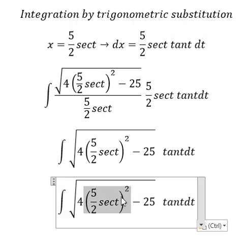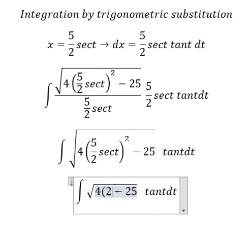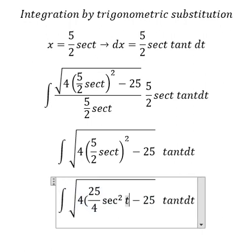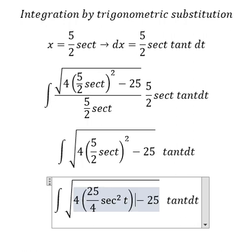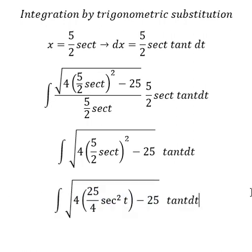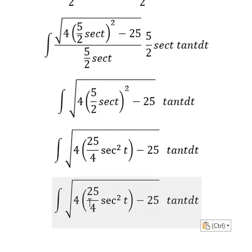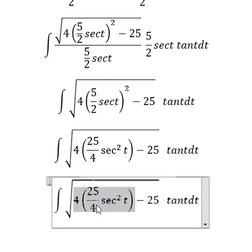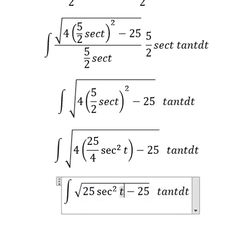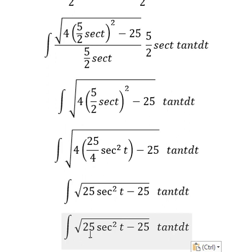So this one, that is 25 over 4 secant of t squared. So 4 and 4 we cancel. Secant of, 25 and 25 we can do factorization.